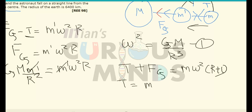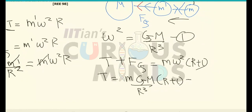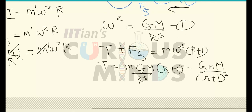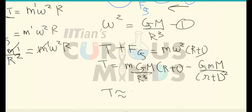Rearranging, tension equals m·ω²·(R + L) minus the gravitational force on the astronaut. Substituting ω² = GM/R³ from equation one, and the gravitational force as GMm/(R + L)², we get: T = m·(GM/R³)·(R + L) − GMm/(R + L)². Substituting the values, the tension is approximately equal to 3 × 10⁻² N. This is the tension acting in the chord.